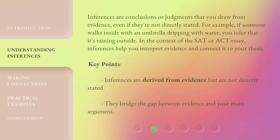Inferences are conclusions or judgments that you draw from evidence, even if they're not directly stated. For example, if someone walks inside with an umbrella dripping with water, you infer that it's raining outside. In the context of the SAT or ACT essay, inferences help you interpret evidence and connect it to your thesis. Key points: inferences are derived from evidence but are not directly stated, and they bridge the gap between evidence and your main argument.